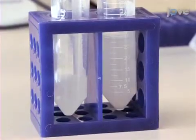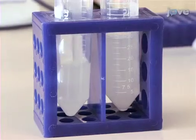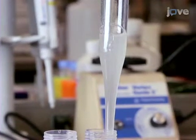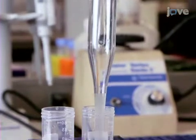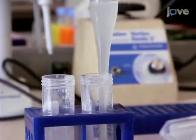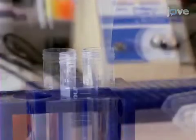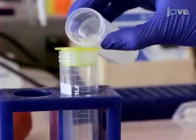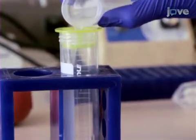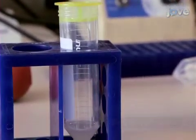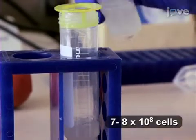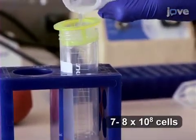After incubating the tubules with trypsin, use a wide-bore pipette to agitate the solution containing the tubules, pipetting them in and out approximately 10 times. The solution should begin to look more like a single-cell suspension. Now, filter each 30 milliliter single-cell suspension through a 100 micron mesh cell strainer. After combining the cell suspensions, count the total number of cells.